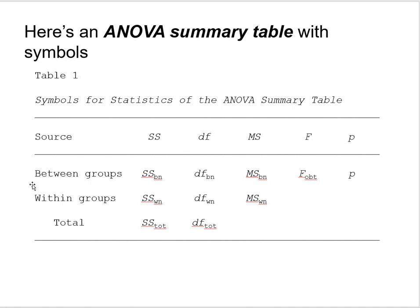The ANOVA summary table consists of three rows for one-way analysis of variance with one between subjects factor. The first row is headed 'between groups,' the second is 'within groups,' and the last is 'total.' There are five kinds of values in the table: the first column is SS for sums of squares, the second is DF for degrees of freedom, the third is MS for mean square, then F for the obtained F statistic, and finally lowercase p for the obtained probability value.